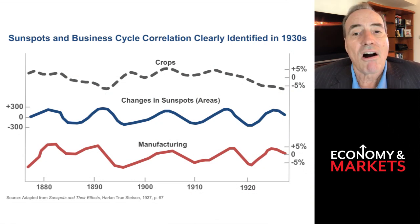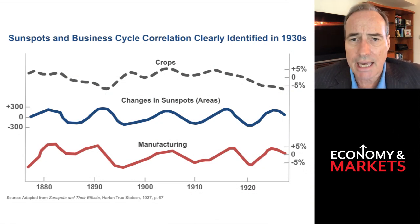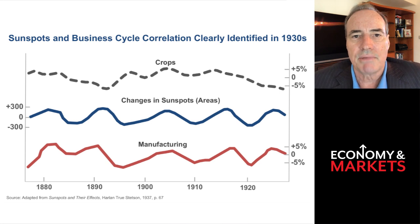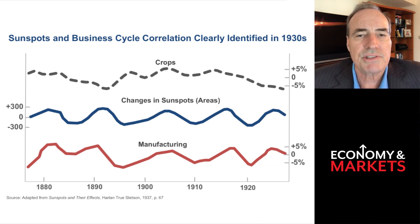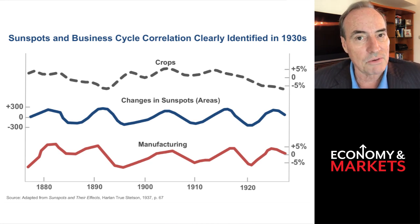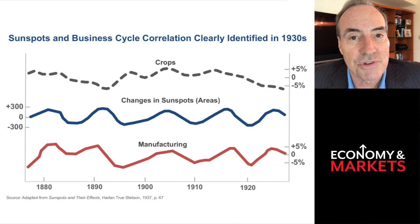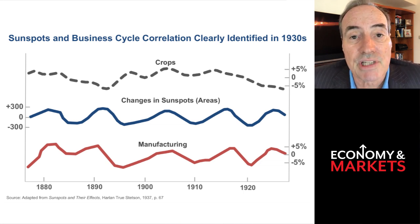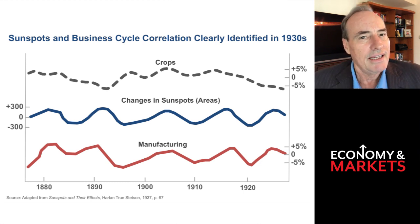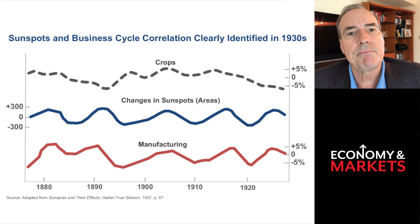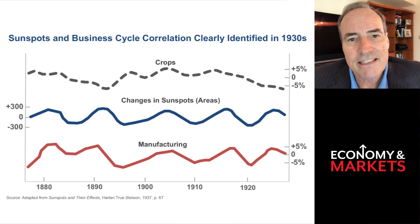I found a book by Harlan True Stanley — back in 1937, he documented sunspot cycles for 50 years from 1880 through 1930 and published this book showing a good correlation with agricultural cycles. But the correlation was strongest with manufacturing cycles — the business cycle. If I were to say it correlates with agricultural production, that wouldn't be a hard story to tell. But it correlates the most with our business cycle.